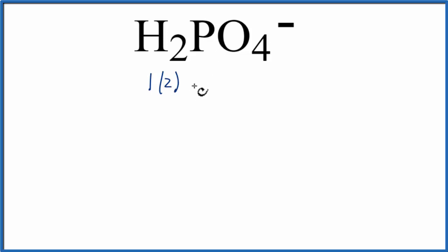Phosphorus group 15, sometimes called 5A, has 5 valence electrons. Oxygen is in group 16, it has 6 valence electrons, we have 4 oxygens. Plus, this minus sign means we have 1 additional valence electron. For a total of 32 valence electrons for the H2PO4 minus Lewis structure.